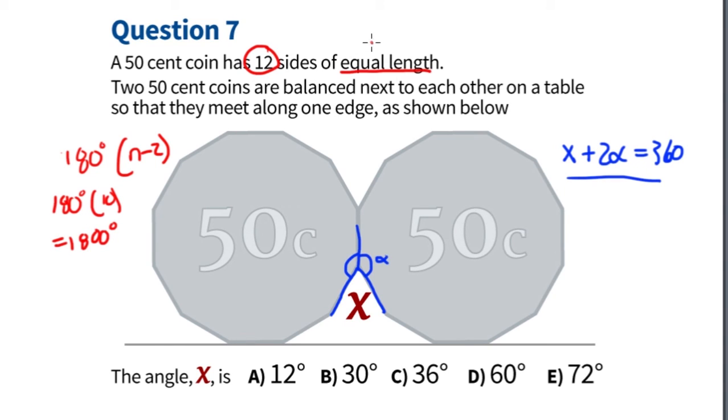Now we use this piece of information that all sides are equal length. Since each side is of equal length, we know that each interior angle is equal. This is alpha right here and this is alpha right here.